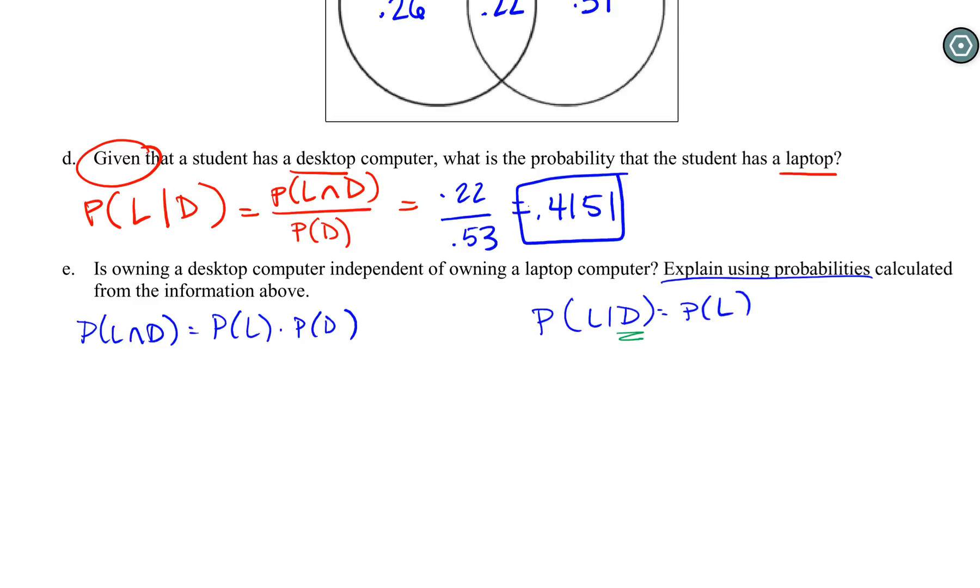You have your two options. Option one: use the independent rule, and this is where you really get in trouble if you had used the independent rule to create your entire table. Option two: use your conditional. If the additional knowledge doesn't tell us anything—knowing they have a desktop isn't giving us any new information because they're not related—well, this is just the probability of laptop. P(L and D) is 0.22. Our P(L) by itself is 0.48 times 0.53. We get 0.2544.